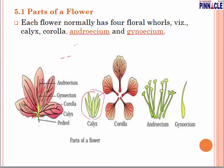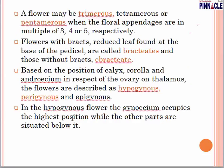The filament and anther together form the stamen. In the anther there will be pollen grains. The entire portion of the male reproductive part is called androecium, and the female part is the gynoecium. The parts of the flower are: gynoecium (female), androecium (male), corolla, calyx, and peduncle.